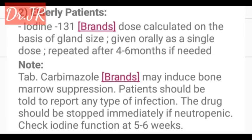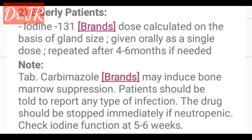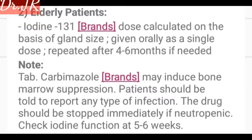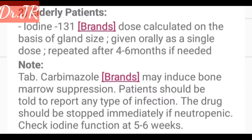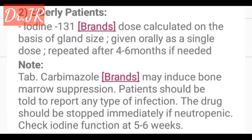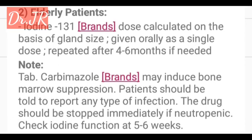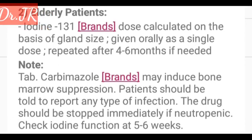For elderly patients, iodine-131 — dose calculated on the basis of gland size — is given as a single dose, repeated after four to six months if needed. Tablet carbimazole may induce bone marrow suppression; patients should be told to report any type of infection, and the drug should be stopped immediately if neutropenia occurs. Check thyroid function at five to six weeks.